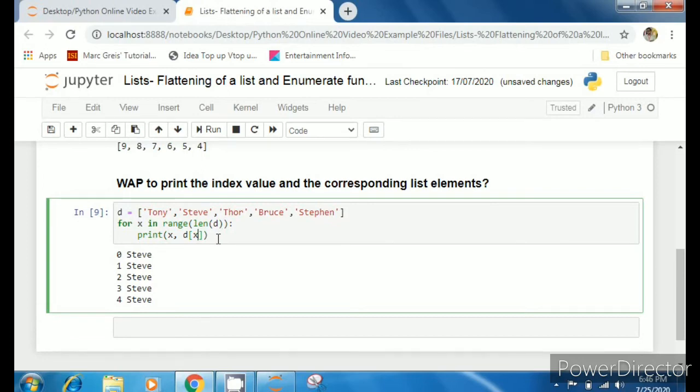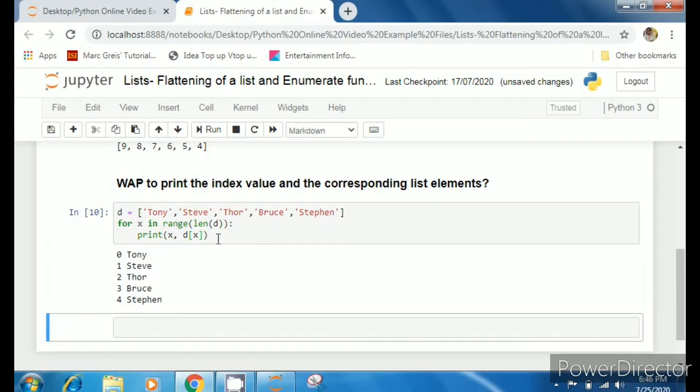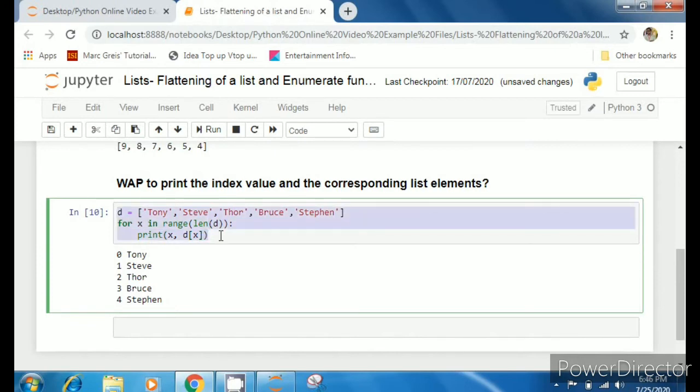What happens: x is 0, then it will also print d[0]. d[0] is Tony. x is 1, then d[1]. x is 2, d[2]. x is 3, d[3]. And our task is done. Then another way to do this is by using enumerate function.